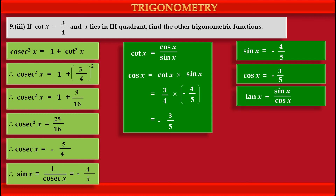Therefore, tan x = sin x / cos x. Substituting the values of sin x and cos x, we get tan x = (−4/5) / (−3/5) = 4/3, because sin x is negative and cos x is also negative, so the negatives cancel, and the 5s cancel. The value of tan x is 4/3.